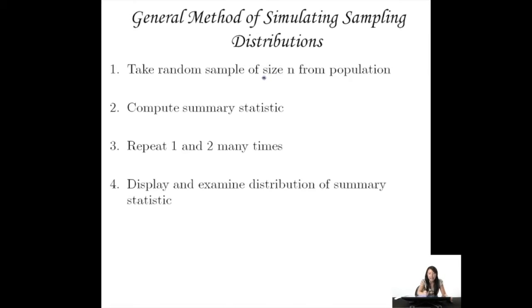Take a random sample of size n from the population, whatever your population is, whatever your sample size is. Then you compute a summary statistic, and this could be the mean, median, mode, variance. It could be a whole bunch of different things. So all those summary statistics we talked about earlier, it could be any one of those things.